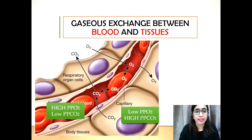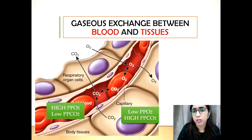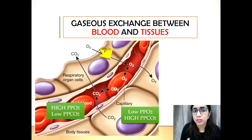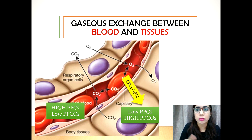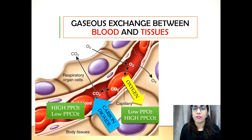Now we will look at gas exchange between the blood and the tissue. Active cell bodies carry out metabolism using oxygen and releasing carbon dioxide, which causes the cell body to have a low partial pressure of oxygen and a higher partial pressure of carbon dioxide. Oxygen then diffuses following the partial pressure gradient from the blood capillaries into the tissues, while carbon dioxide diffuses following the partial pressure gradient — from high partial pressure of carbon dioxide in the cell — back into the blood capillary.